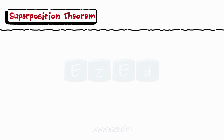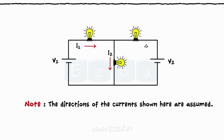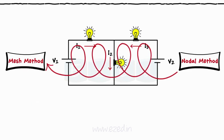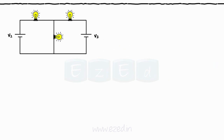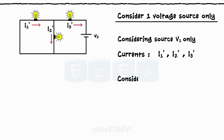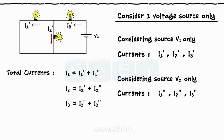Consider a circuit in which three bulbs are connected to two batteries and we need to find the current flowing through each branch. Applying mesh or nodal analysis may complicate the process if the network is more complex. So we consider only one voltage source at a time and calculate all the currents, then consider the second source only and calculate all the currents. The total current flowing in the network is calculated by the algebraic sum of all the currents.